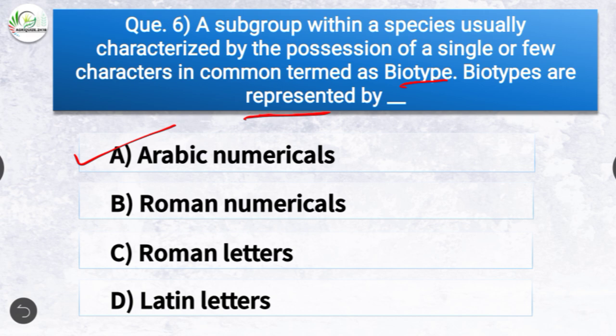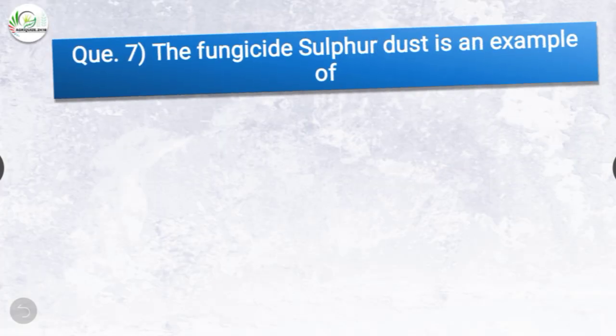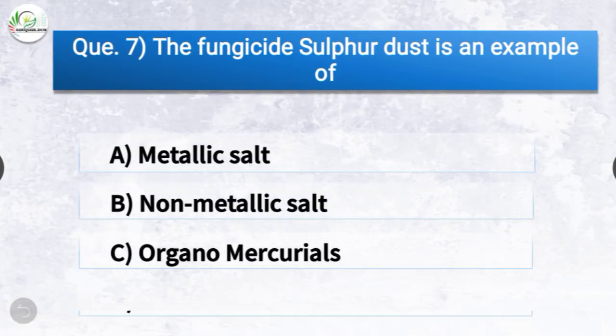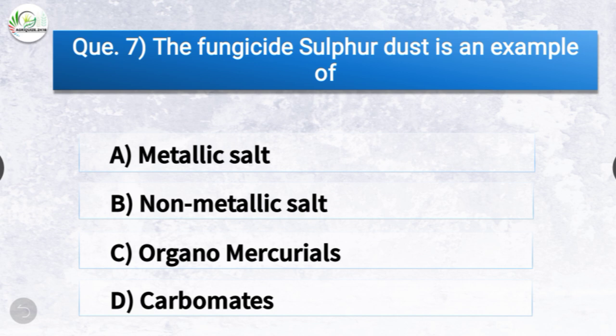Question number seven: The fungicide sulfur dust is an example of dash. The options are metallic salt, non-metallic salt, organomercurials, or carbamates. The correct answer is option B, non-metallic salt. The fungicide sulfur dust is an example of non-metallic salt.